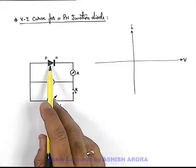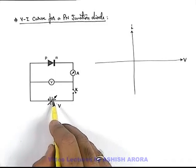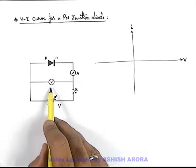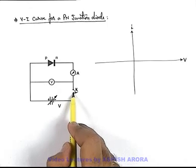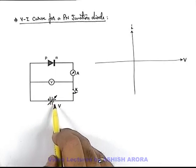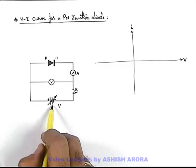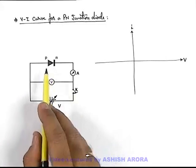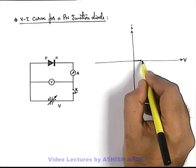Here we can see that across this PN junction diode, we have applied a variable potential difference. For measurement of potential difference and current, we are using a voltmeter and ammeter. When the key is closed and voltage is increased, initially the current is of quite low order.